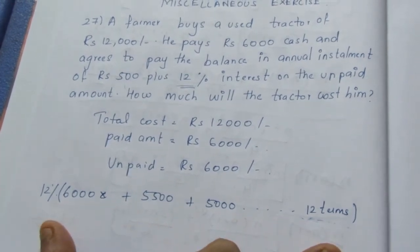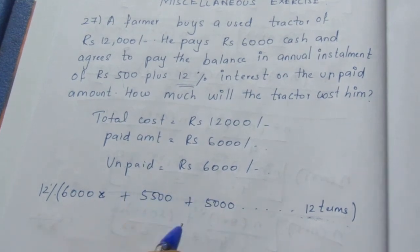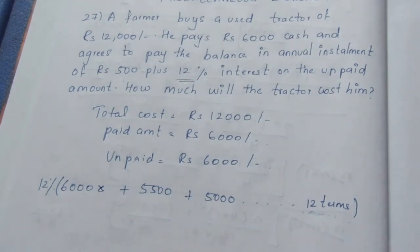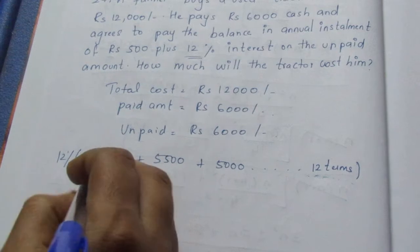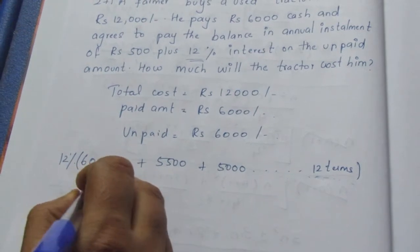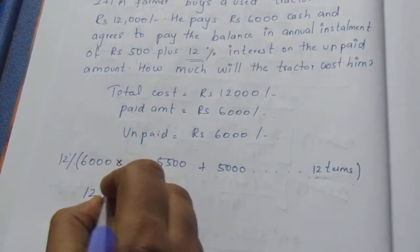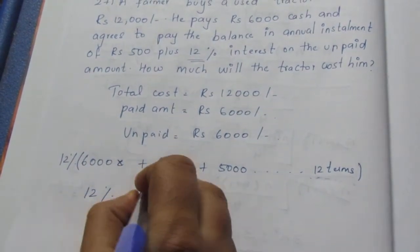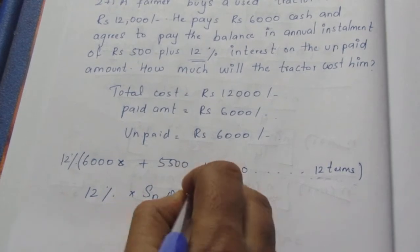We can see that this is in AP — each term decreases by 500, so the common difference is minus 500. This is in AP and we can apply the S_N formula. We take 12% into S_N of this AP.